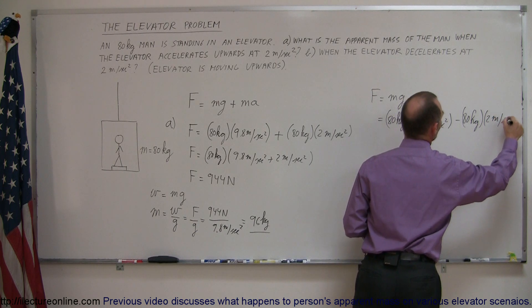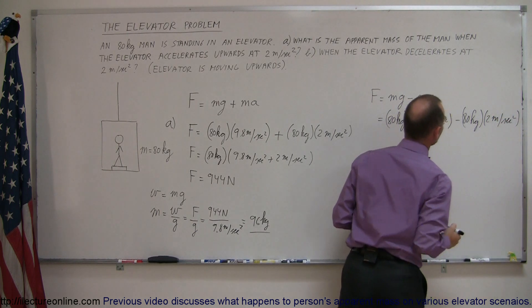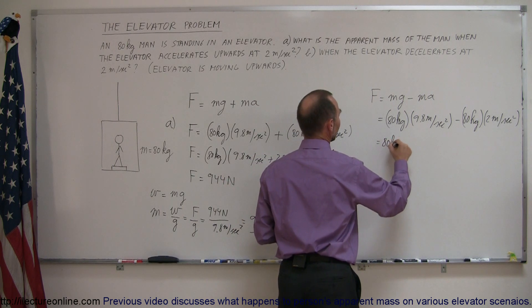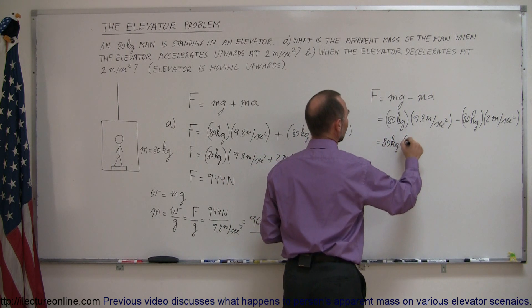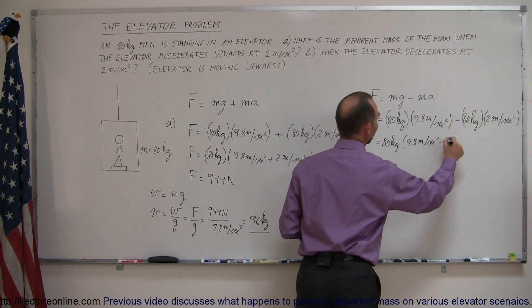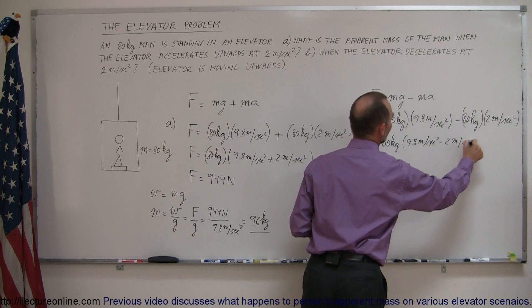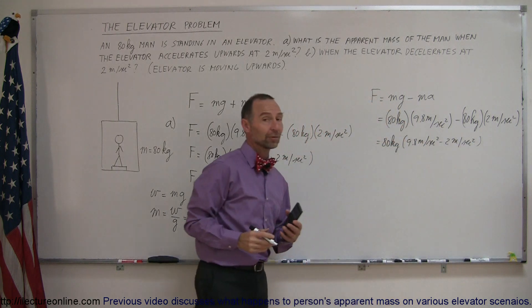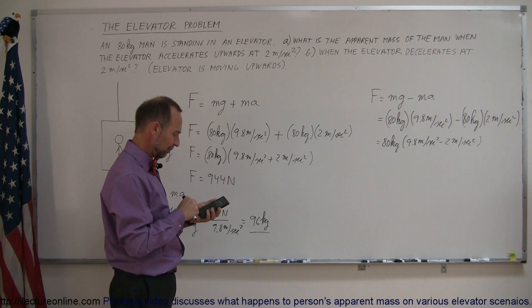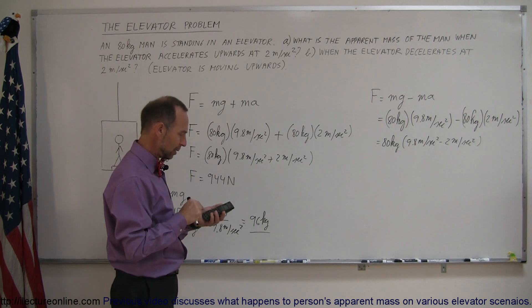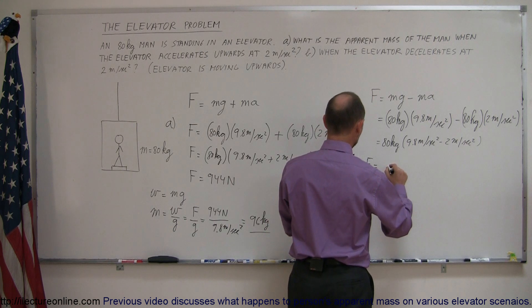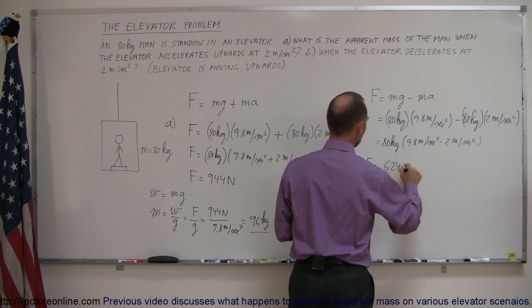Factoring out the 80 kilograms, we get 80 times the quantity 9.8 minus 2 meters per second squared, which is 80 times 7.8. The force pushing down on the bathroom scale is therefore only 624 newtons, which is of course less than the actual weight of the person.